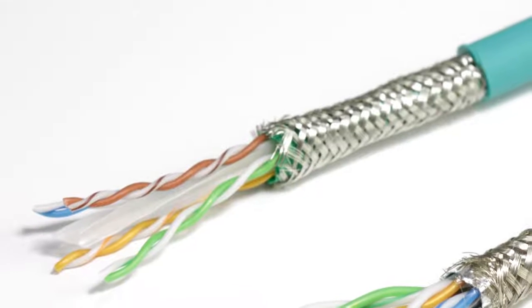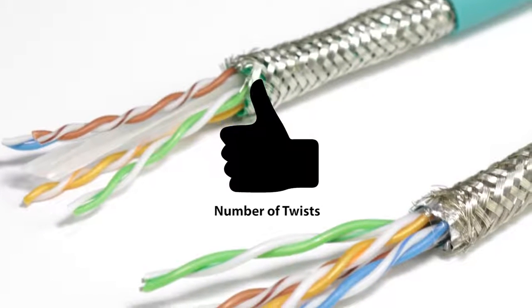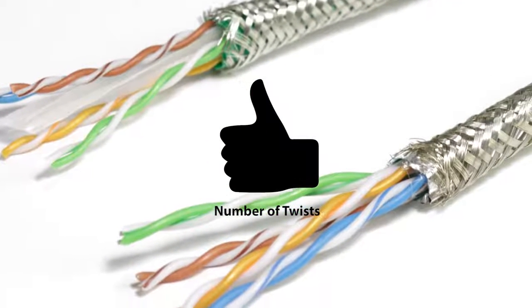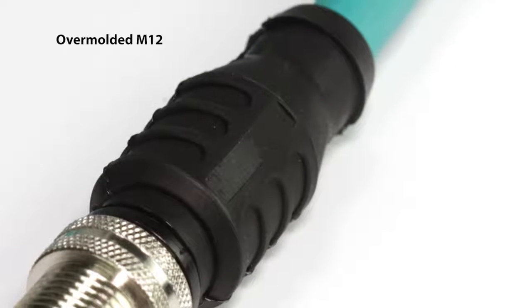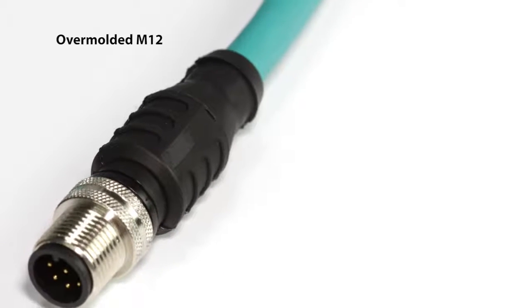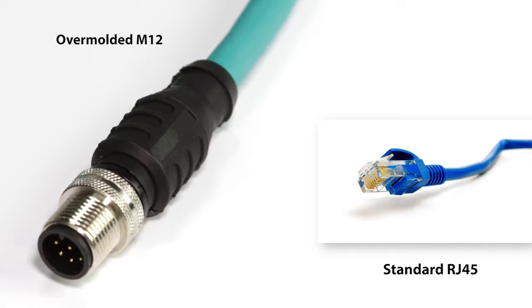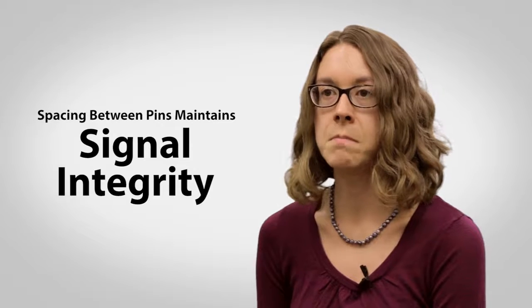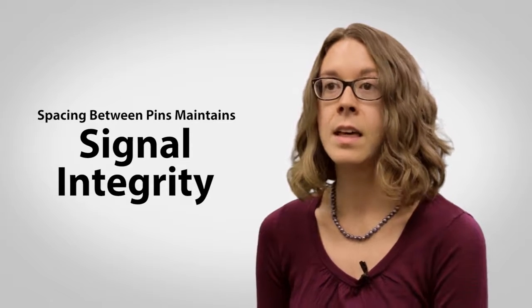For any Ethernet connector, the number of twists must remain at an acceptable level throughout the connector. An overmolded M12 is used for industrial Ethernet because it is considerably more robust and rugged than the RJ45, and the spacing between pins maintains signal integrity. This is what makes it ideal for the factory floor.